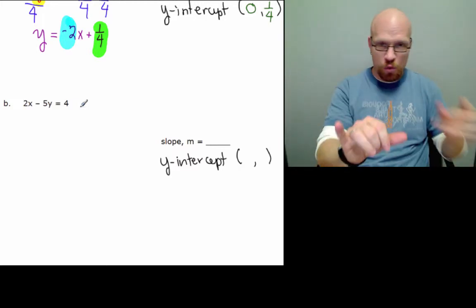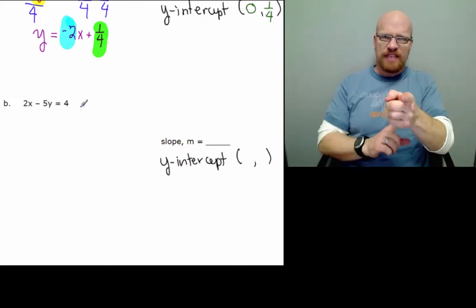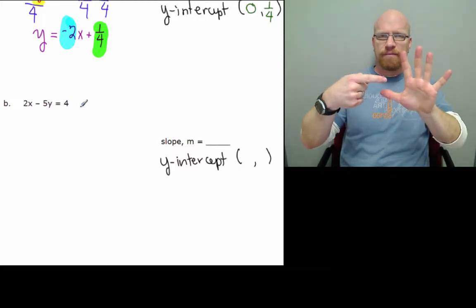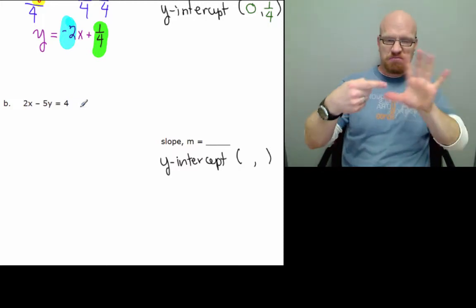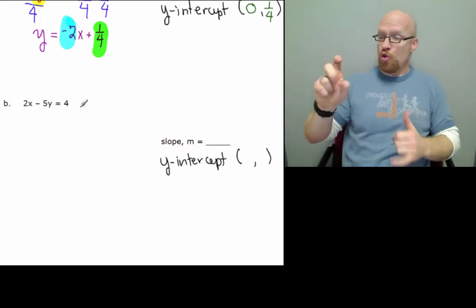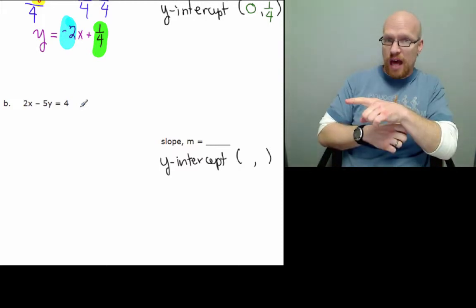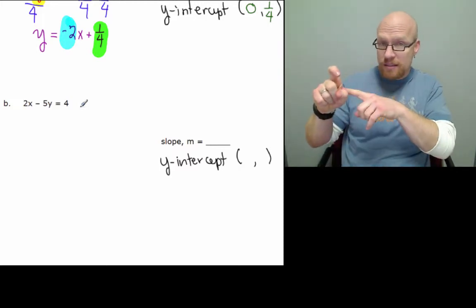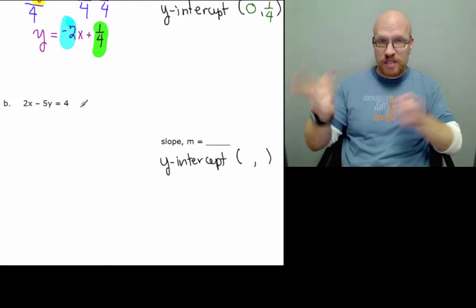So again, we see the y. We're going to leave it there with a negative 5. Negative 5y, leave that for now. 2x, we can deal with that. So 2x, we're going to subtract 2x from both sides.